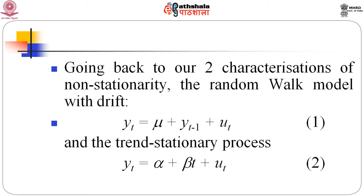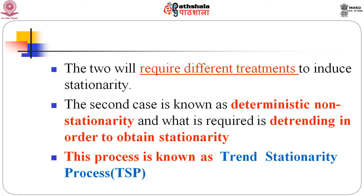Going back to the two characteristics of non-stationarity: the random walk model with drift where y_t = y_{t-1} + u_t + mu, and the trend stationary process y_t = alpha + beta*t + u_t. These two will require two different treatments to introduce stationarity. The second case is known as deterministic non-stationarity, and what is required is detrending in order to obtain stationarity. In the literature this is known as the trend stationary process.